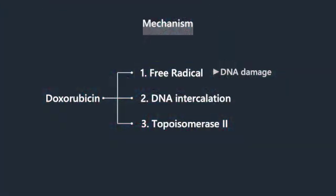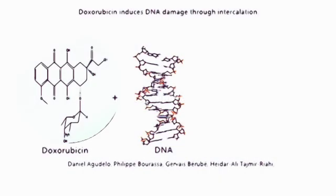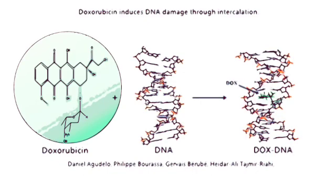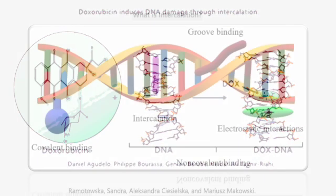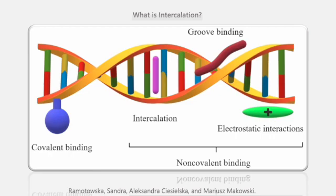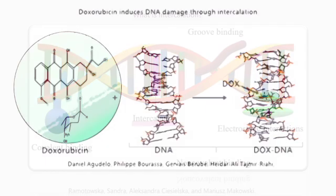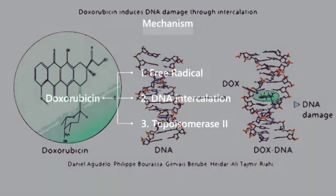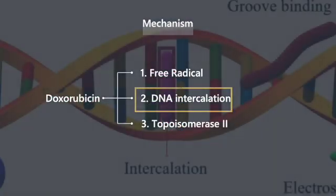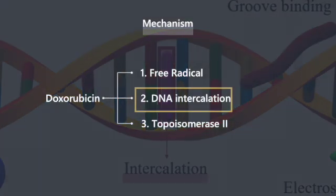Second, doxorubicin induces DNA damage through intercalation. Intercalation is a spatial binding mode where the planar aromatic moiety of a small molecule is inserted between a pair of base pairs, causing structural changes in the DNA and leading to its functional arrest. Doxorubicin induces DNA damage through intercalation.